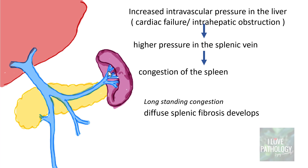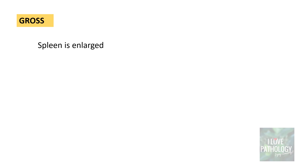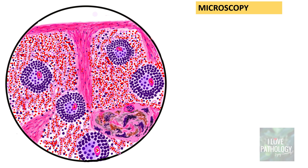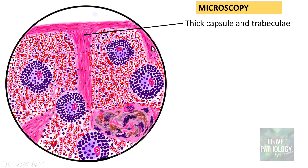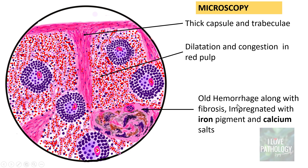In long-standing cases, just like in CVC liver, there will be diffuse splenic fibrosis. Sometimes you find iron-containing fibrotic and calcified foci of old hemorrhages, classically known as Gamma-Gandy bodies. Grossly, the spleen is enlarged, firm and tense, the capsule is thickened, and at the cut surface it oozes dark blood. Microscopically, the capsule and trabeculae are thickened, and there is congestion in the red pulp — the splenic sinusoids are congested.